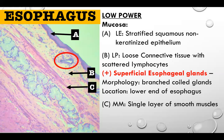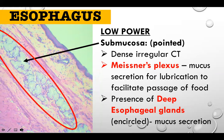The clue for the submucosa is the deep esophageal glands. The submucosa is composed of dense irregular connective tissue. Also present, though not visible in this slide, is the Meissner's plexus — nerve plexuses responsible for mucosecretion, which lubricates and facilitates the passage of food from the oral cavity down to the stomach.